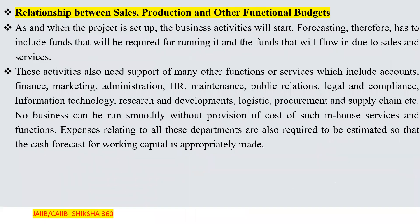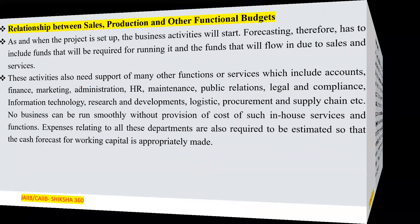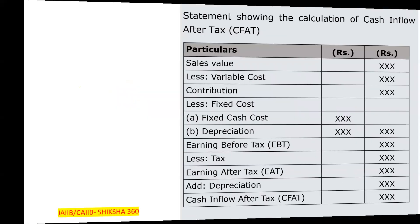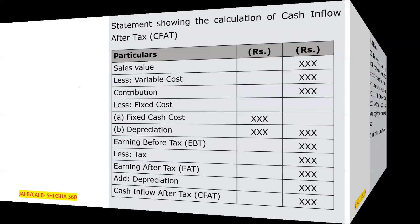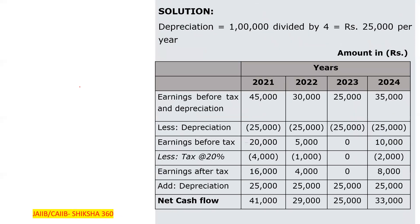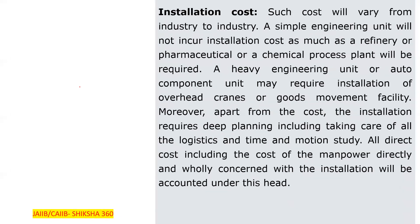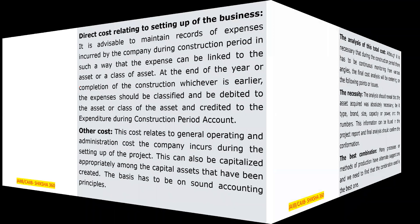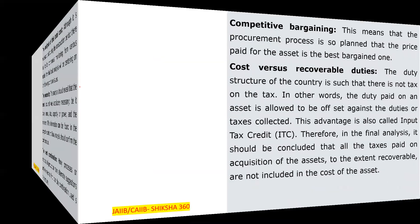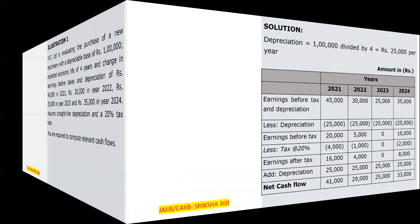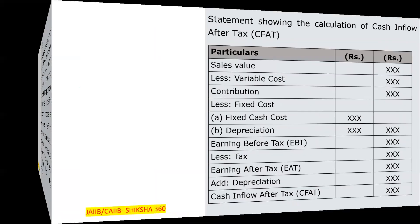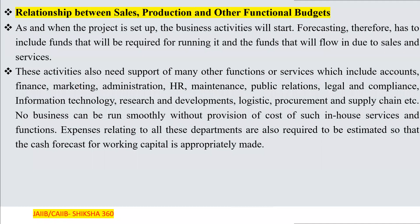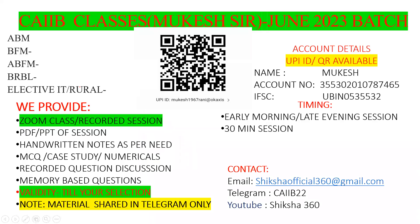The relationship between sales, production, and other functional budgets — and how to compute relevant cash flows — will be covered in the next session along with two numericals. These are very important questions from the examination point of view. The next session will start from the cash forecast. Thanks to all of you for joining this session.